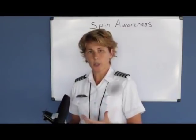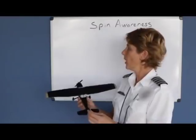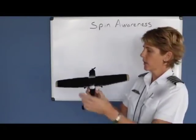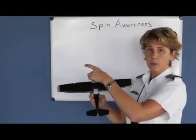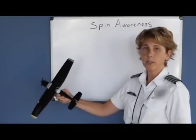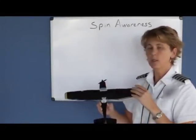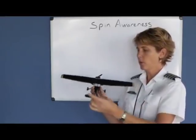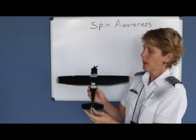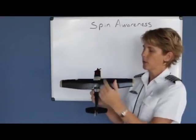We just talked about stalls and what makes an airplane stall. When you stall an airplane, as long as the tail stays behind the nose — whether you're going straight or you're in a coordinated turn — when the airplane stalls, both wings stall the same, so the nose would just drop straight forward. The problem arises when the tail is no longer behind the nose.